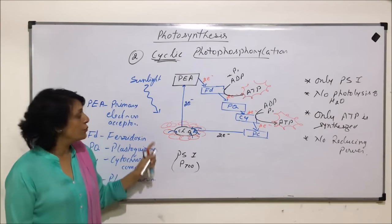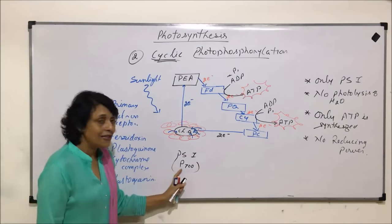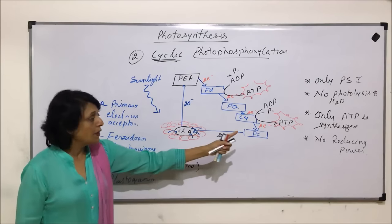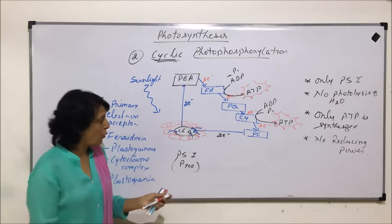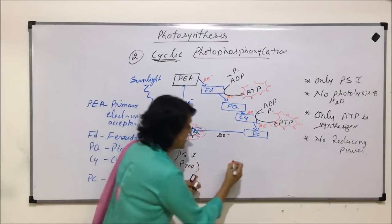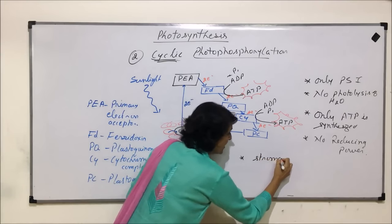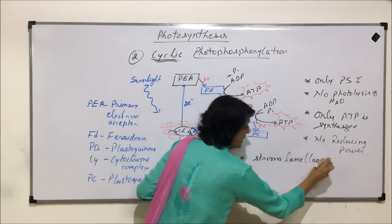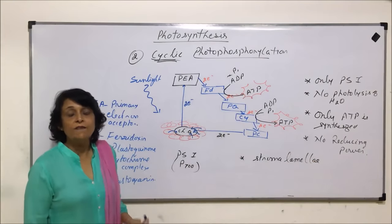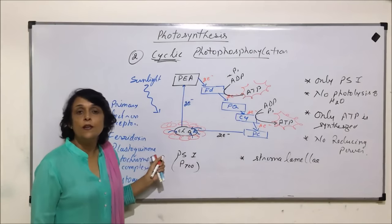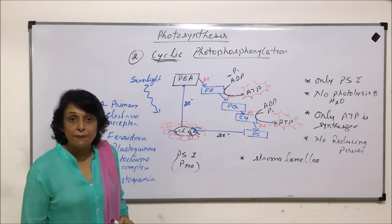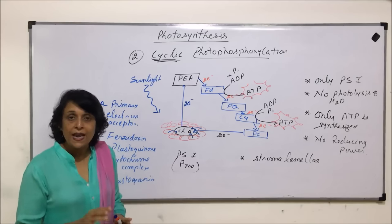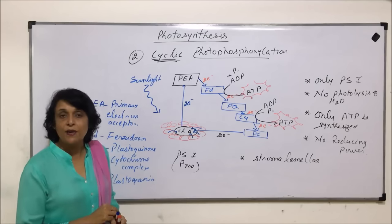One more important thing which we need to know about this. This PS1 is not associated with the complex which helps in photolysis of water. And this is present in stromalamellae. In case of non-cyclic, we said that non-cyclic photophosphorylation takes place in thylakoid membrane. Because in thylakoid membrane, PS2 and PS1, both are present. And that is why both can participate in the pathway.